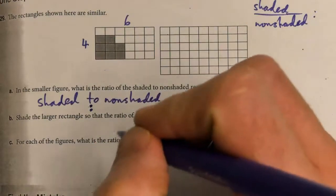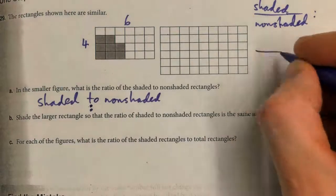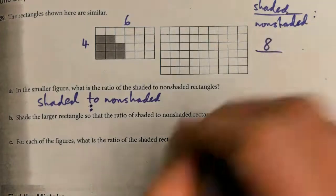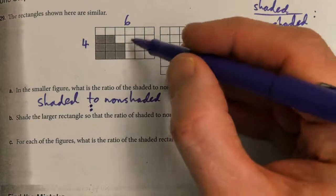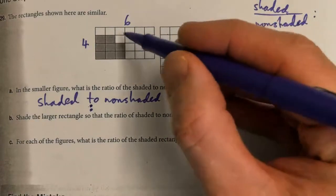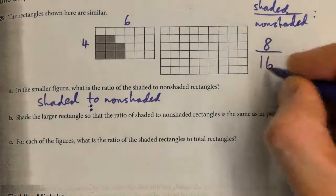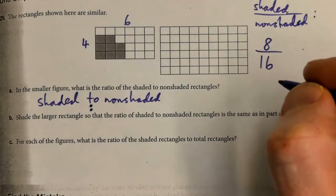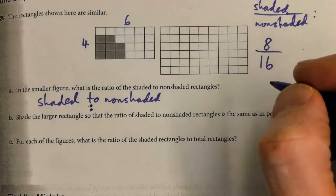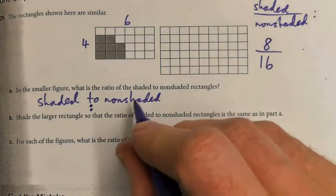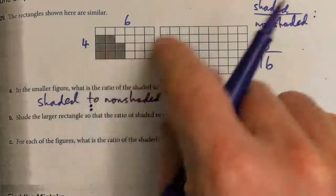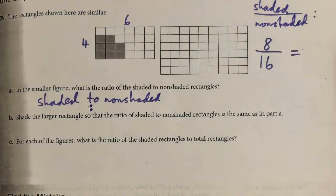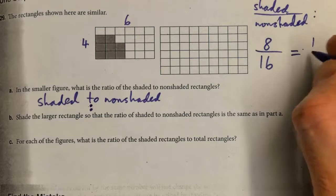There's 24 total. How many shaded? There's 1, 2, 3, 4, 5, 6, 7, 8 shaded. Non-shaded: 24 minus 8 is 16. So shaded to non-shaded is 8 to 16. It's not shaded to total, it's shaded to non-shaded, so there's twice as many non-shaded as shaded. You can write that as 1/2 or one over two.